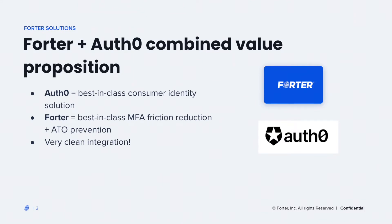If you're not familiar with Fortr, the aspect of the Fortr service that I'm going to be talking about today is trusted identities, which prevents account takeover attempts while also reducing user friction from MFA. If you're not familiar with Auth0, Auth0 is a best-in-class identity provider for consumer-facing applications. So the combination of Auth0's identity services with Fortr's friction-reducing ATO prevention makes for an extremely powerful combined solution.